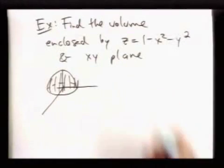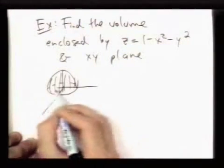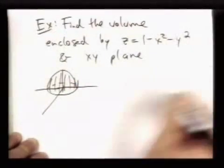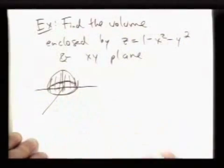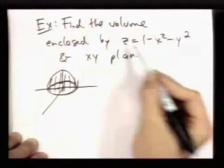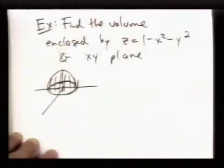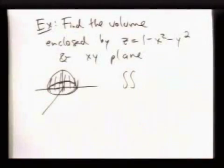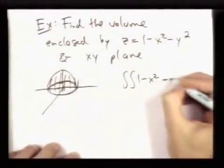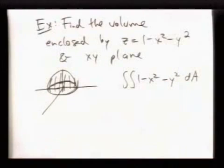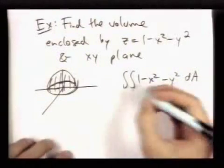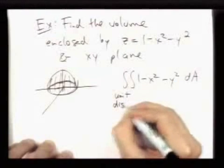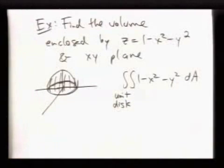To answer this question, really what we're doing is finding the volume under the graph of this function, but over the unit circle. Because when z is equal to 0, we just have an equation of the unit circle. So really the thing we're computing is the double integral of 1 minus x squared minus y squared over the unit disk.